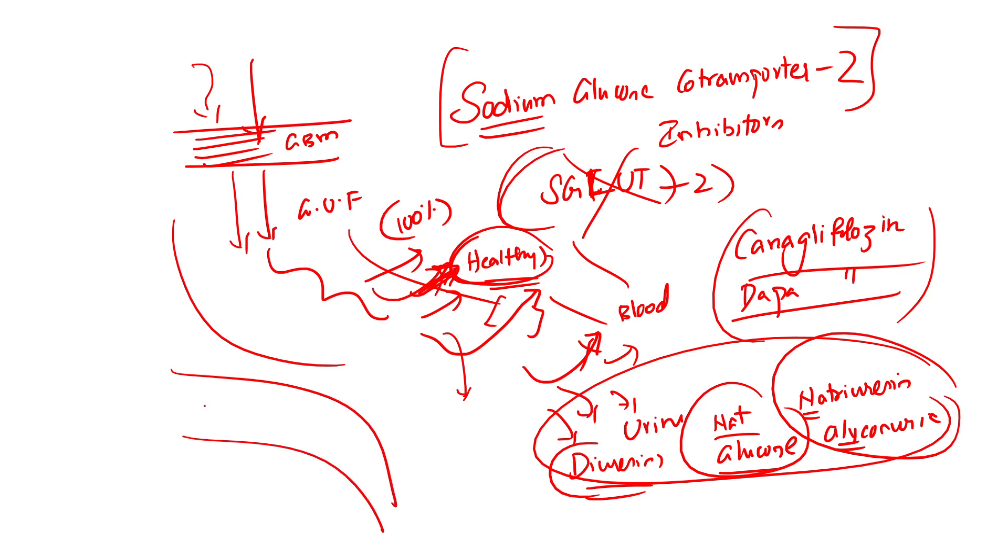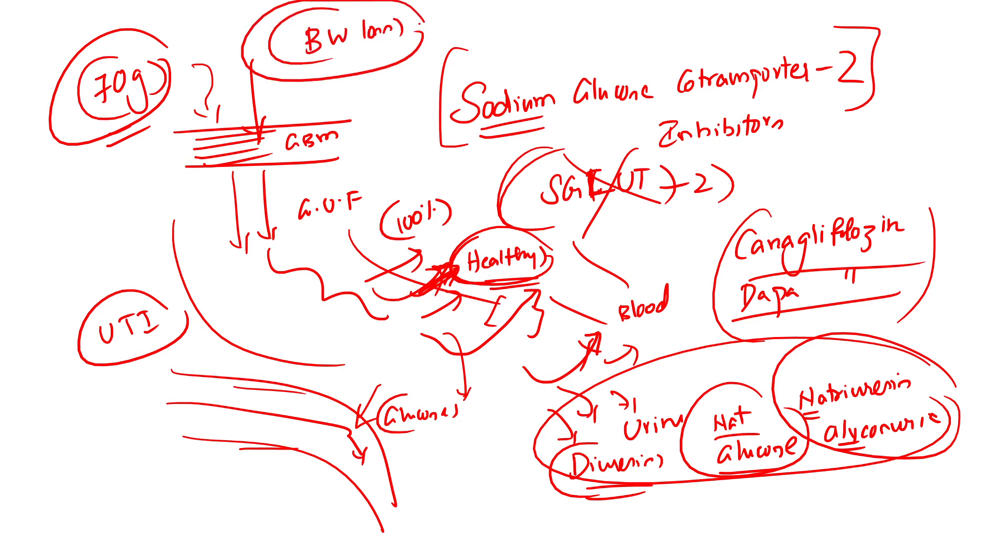Also, the whole urinary tract will be lined by the excessive amount of glucose running through the urine. So when glucose is coating the urinary tract, the patient becomes more susceptible to UTI. Also remember, because clumps and clumps of glucose can be lost in the urine, up to 70 grams of glucose can be lost in the urine, body weight loss is an additional feature which can be taken as a good side effect if at all the patient is obese.